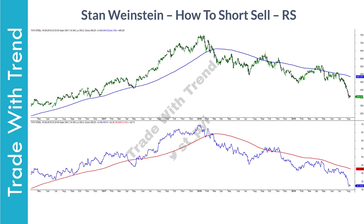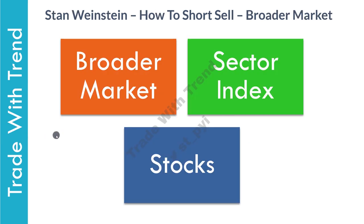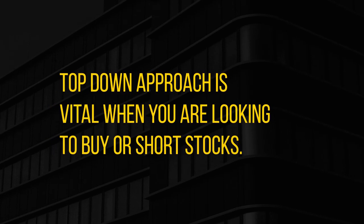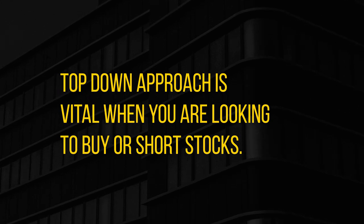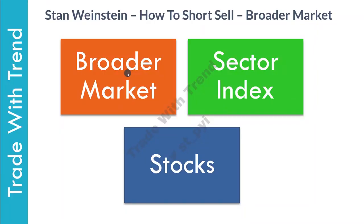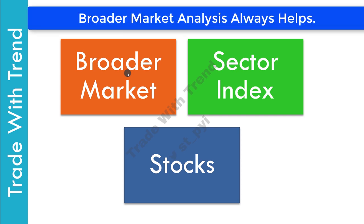In case you trade currencies and commodities, I will be explaining later how to plot the RS indicator for those asset classes. The role of broader market is quite often underestimated in short selling. Stan Weinstein clearly states that short sell trades are more profitable and easier to manage if the broader market trend is also down. Stan advocates a top-down approach: traders should first check for broader market trend, then sector trend, and then individual stock trend.